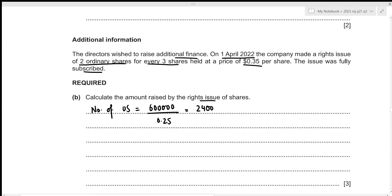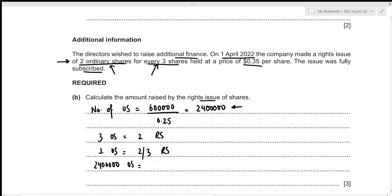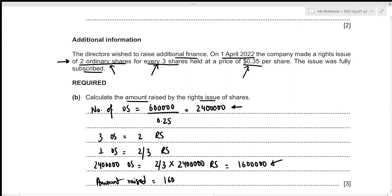For every 3 ordinary shares, 2 right shares are issued, so for 1 ordinary share we issue 2/3 right shares. For 2,400,000 ordinary shares: 2/3 × 2,400,000 = 1,600,000 right shares. The amount raised is 1,600,000 × $0.35 = $560,000.